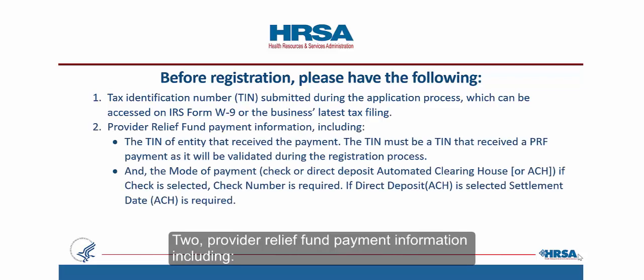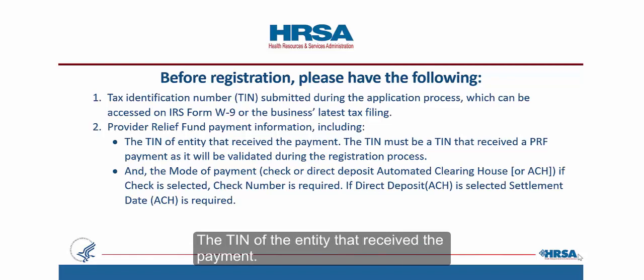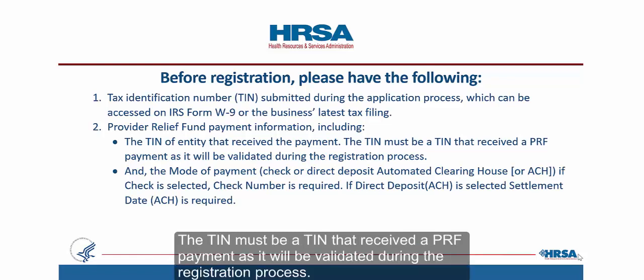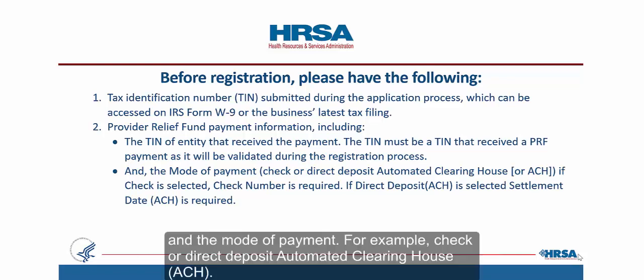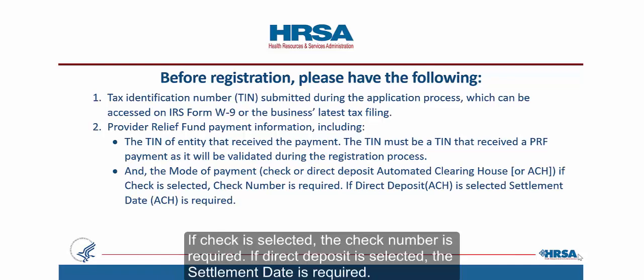Second, Provider Relief Fund payment information, including the TIN of the entity that received the payment. The TIN must be a TIN that received a PRF payment, as it will be validated during the registration process. Third, the mode of payment — for example, check or direct deposit via automated clearinghouse (ACH). If check is selected, the check number is required. If direct deposit is selected, the settlement date is required.